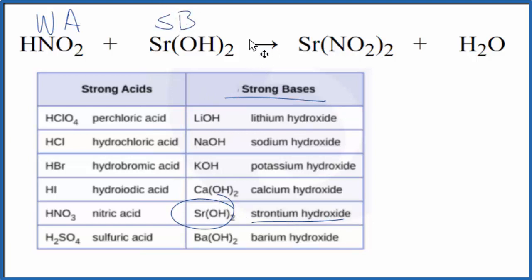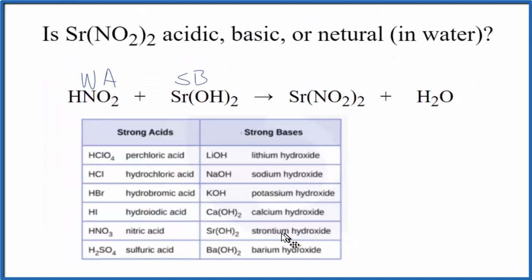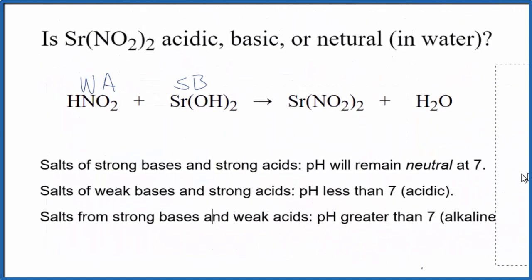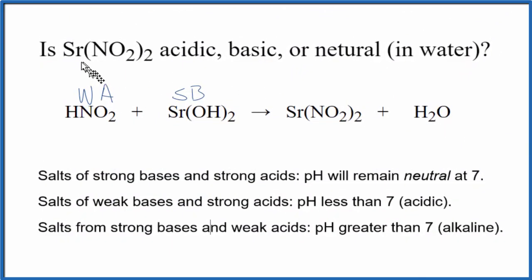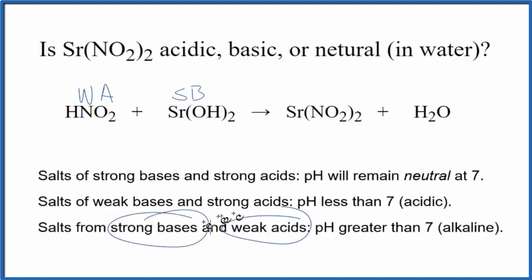Now we know the strengths of the acid and base involved in the neutralization reaction. Using the rules for predicting solution pH, we look for the case of a weak acid and a strong base. That rule tells us the pH of the solution will be greater than seven — it'll be alkaline, which we also call basic.